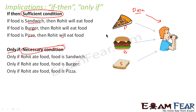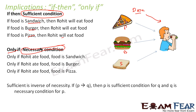And 'if-then' is a sufficient condition, because if pizza is the food, rohit will eat. So if the end goal is 'Rohit will eat food', it will be satisfied if the food is pizza, sandwich, burger, or dosa — all are sufficient conditions. But 'only if Rohit eats food' is a mandatory or necessary condition. We also see that sufficient is the inverse of necessity. For example, if we say P implies Q — if P then Q — then P is the sufficient condition and Q is the necessary condition.